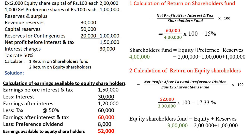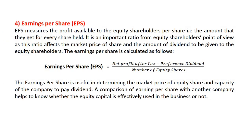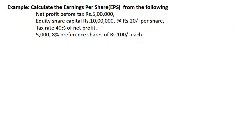The next ratio is earnings per share (EPS). It measures the profit available to equity shareholders per share — the amount they get for every share held. It is an important ratio from the equity shareholders' point of view as it affects the market price of the share and the amount of dividend to be paid. The formula is: net profit after tax minus preference dividend, divided by number of equity shares. EPS helps determine market price and the company's capacity to pay dividend.